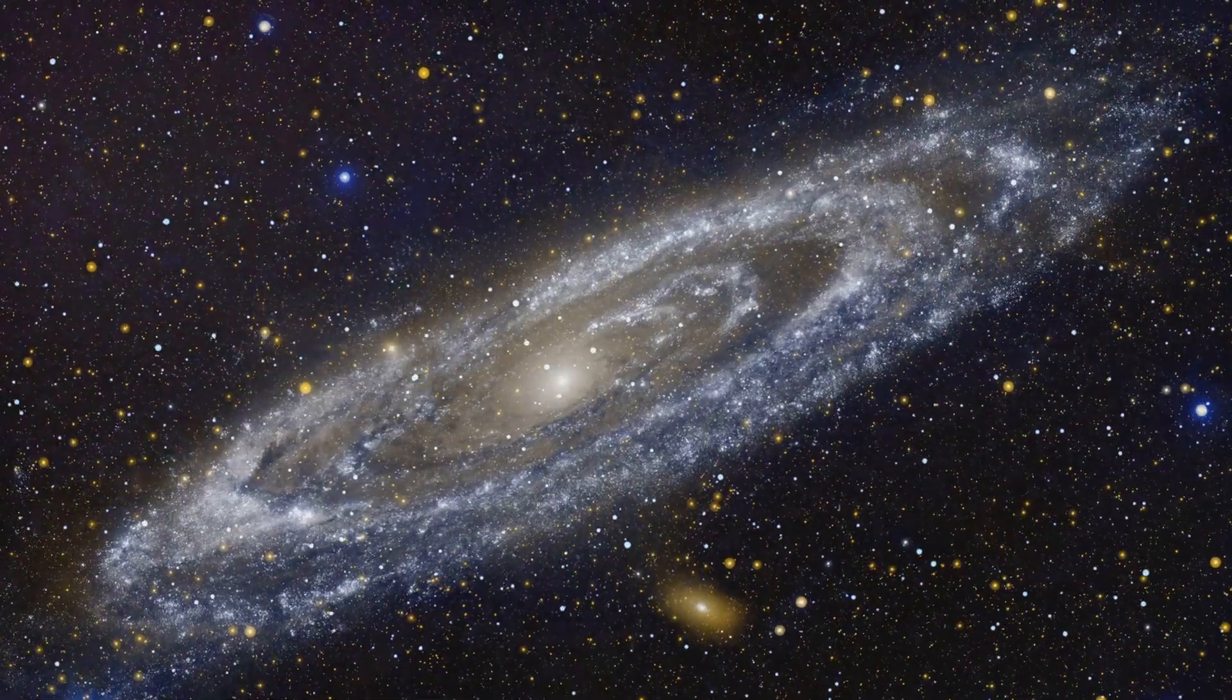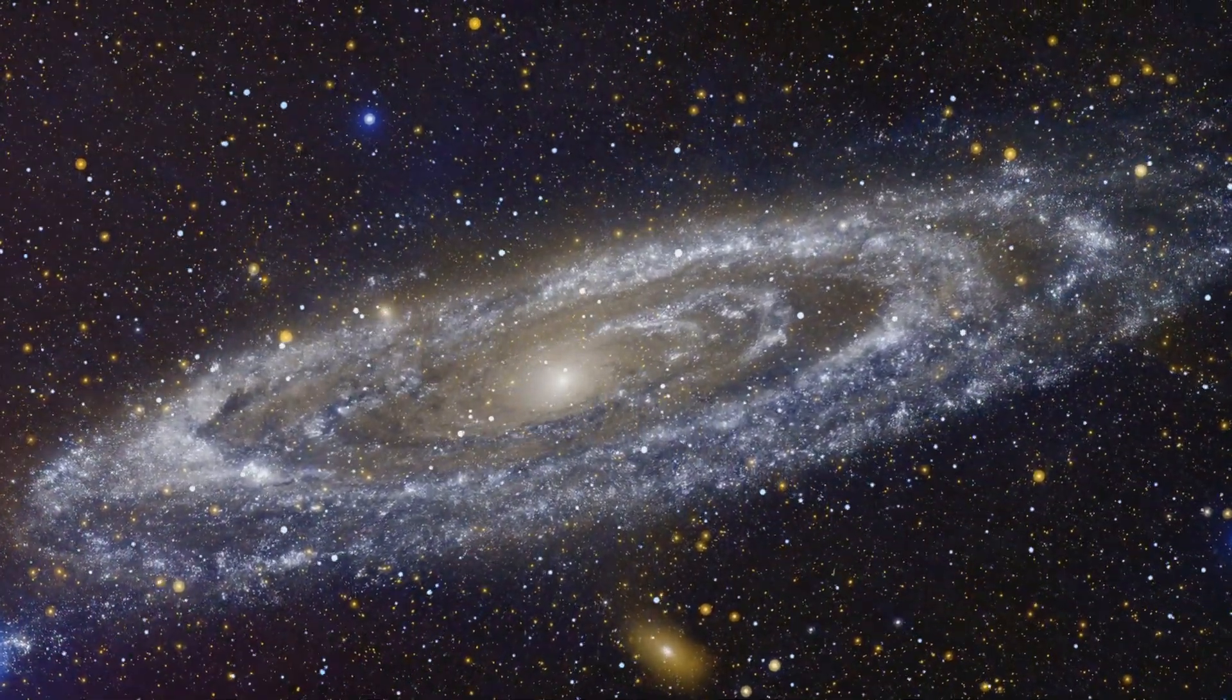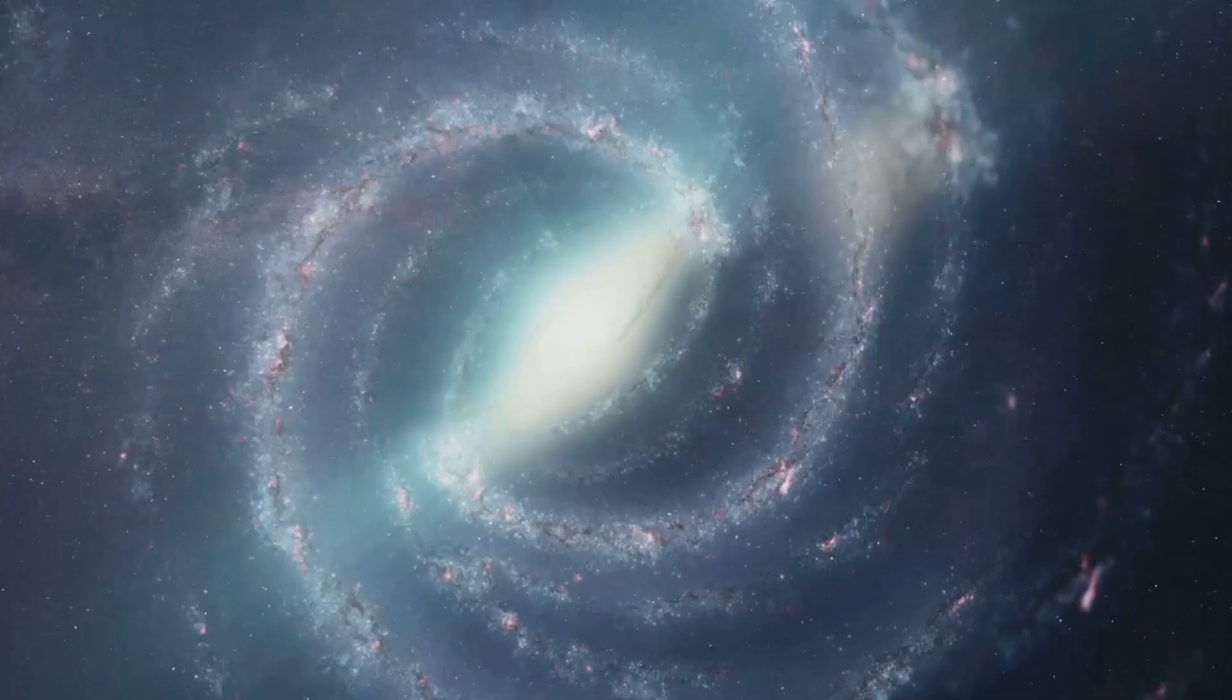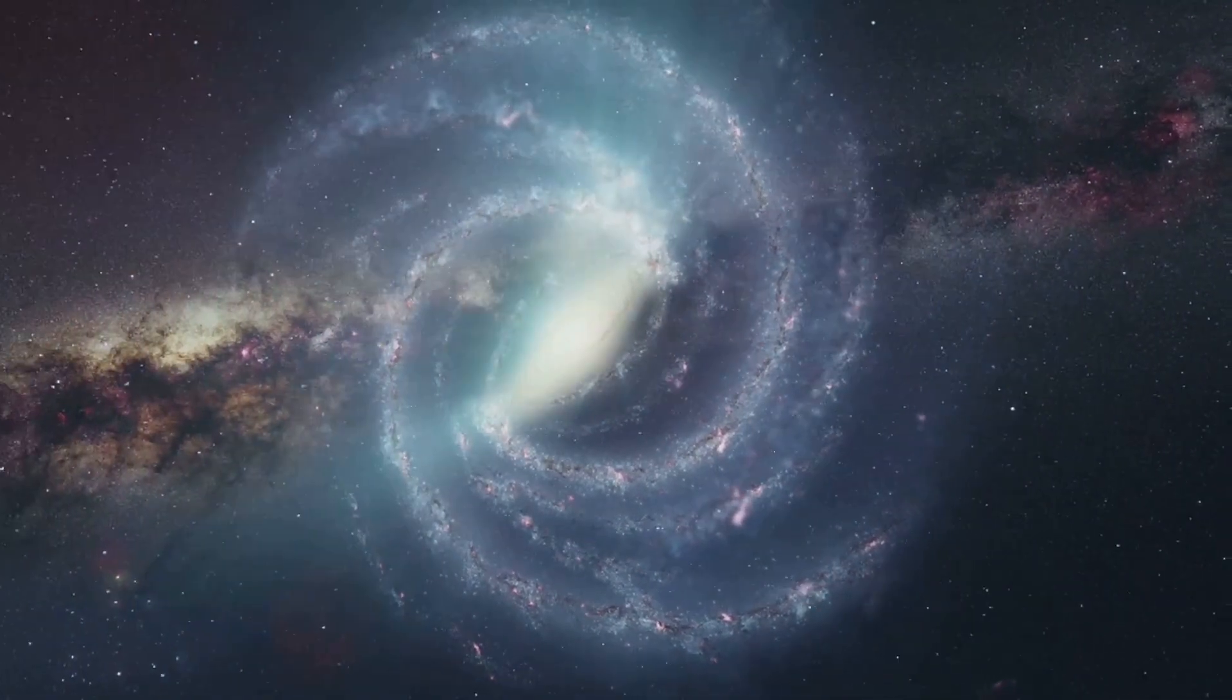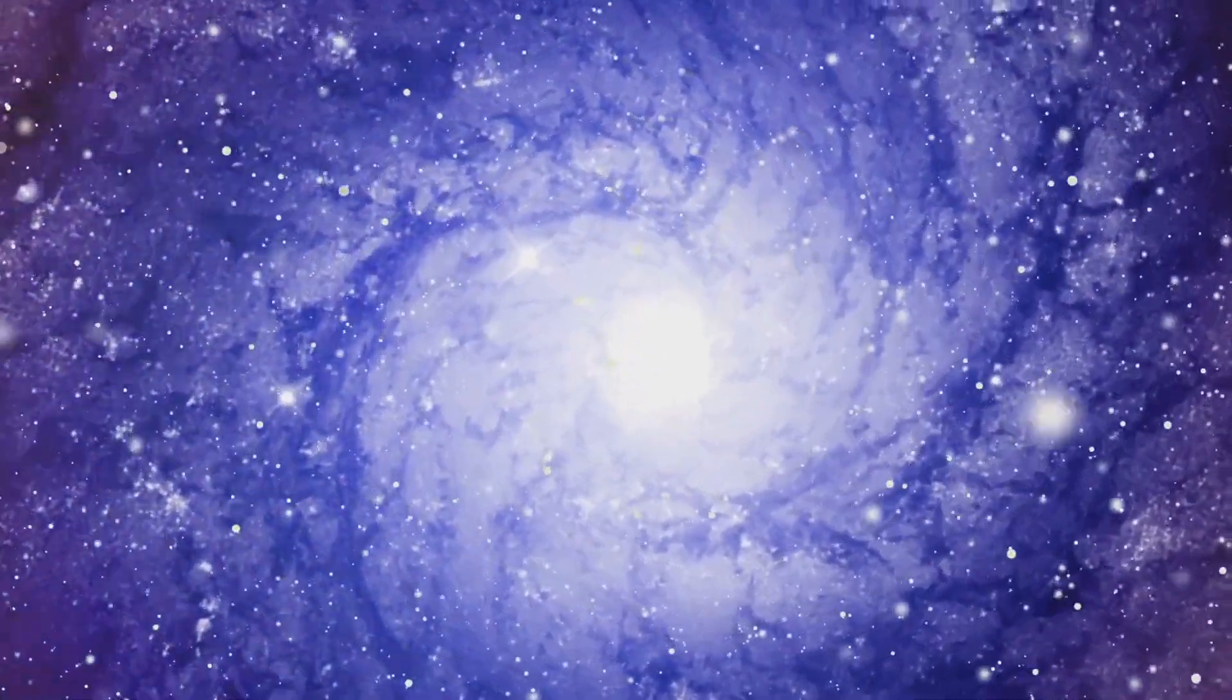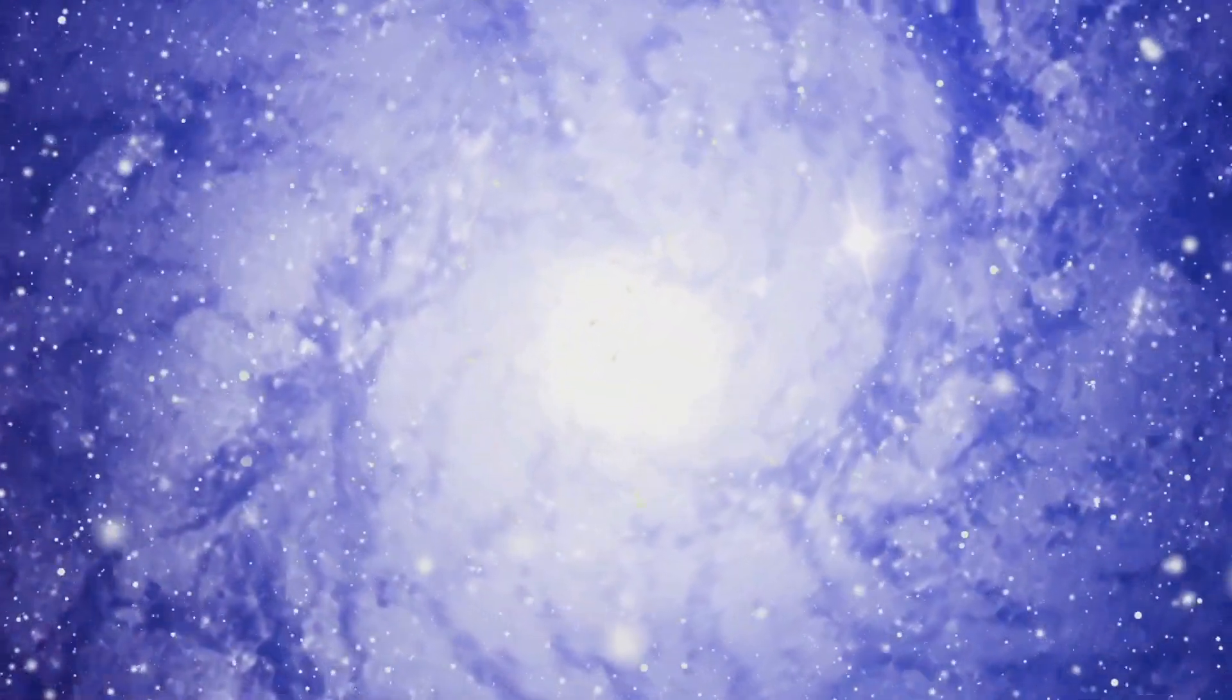Among these galactic neighbors, one stands out as both familiar and extraordinary, the Andromeda galaxy. Andromeda, also known as M31, is the largest galaxy in our local group, which includes the Milky Way, the Triangulum Galaxy, and about 54 other smaller galaxies. Like our own Milky Way, Andromeda is a spiral galaxy, a majestic collection of stars, gas, and dust. Bound together by gravity, its spiral arms are filled with young hot stars that shine brightly, illuminating the galaxy's structure. The core of Andromeda is densely packed with older stars, and it is believed to harbor a supermassive black hole at its center.